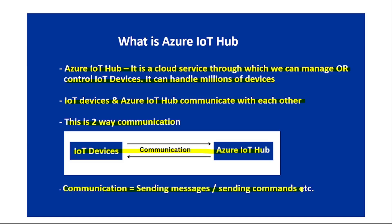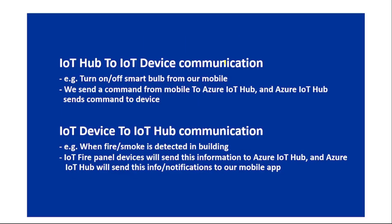Messages, commands, and telemetry will be discussed in detail in upcoming videos. The communication between IoT devices and IoT Hub can be two-way. For IoT Hub to IoT device communication — for example, we can turn on or off the smart bulb from our mobile by sending a command to Azure IoT Hub, which then sends that command to the device. For IoT device to IoT Hub communication — when fire or smoke is detected, the fire panel devices send this information to Azure IoT Hub, which then sends it to our mobile app.